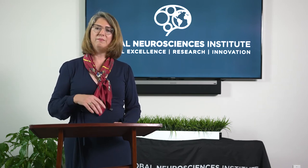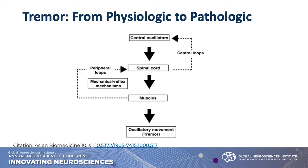Where do tremors come from? They come from the brain. There are central oscillators in the brain — parts of the basal ganglia, parts of the cerebellum, and the thalamus. When these central oscillators get out of whack, we start to have a tremor. That translates through to the spinal cord, then to the muscles, and then to the oscillatory movement we see in the head, vocal cords, arms, and legs. The central loop and the peripheral loop are really where we try to impact most of our interventions.